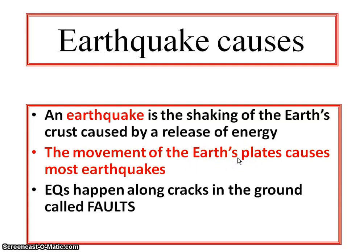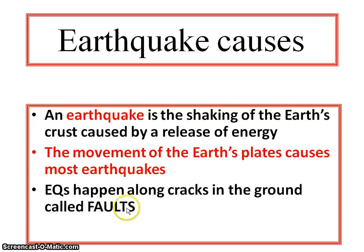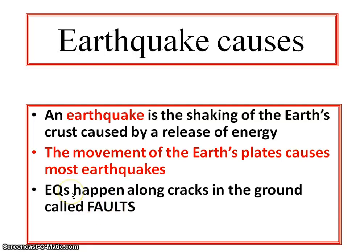Our earth consists of 7 major tectonic plates and some minor tectonic plates. The movement of those plates will cause earthquakes. Earthquakes happen along the fault region — along the cracks in the ground called faults. Whenever a fault occurs, we can experience an earthquake.